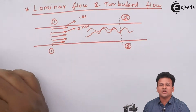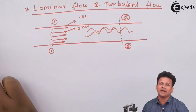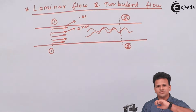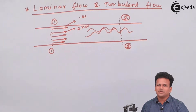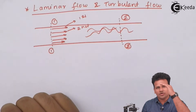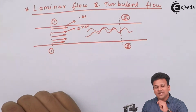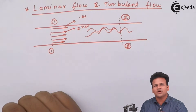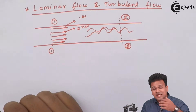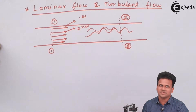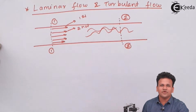How do we differentiate between laminar and turbulent flow? For example, if we switch on a tap at full flow, you can see the water flowing. If the water appears white in color, that means the adjacent layers of the liquid are mixing with each other — that flow is called turbulent flow.